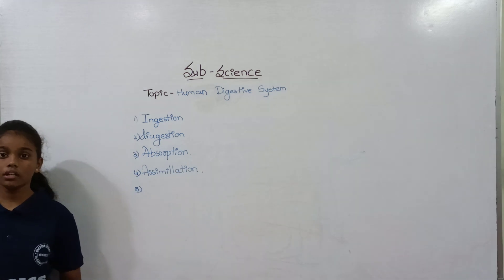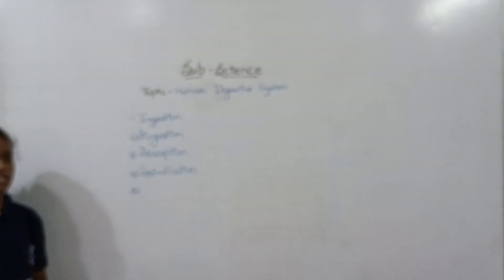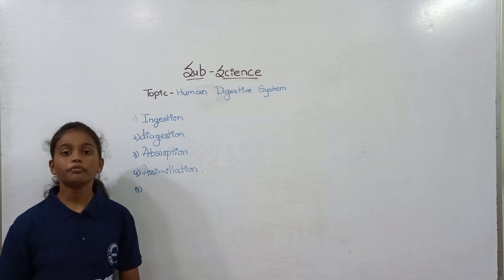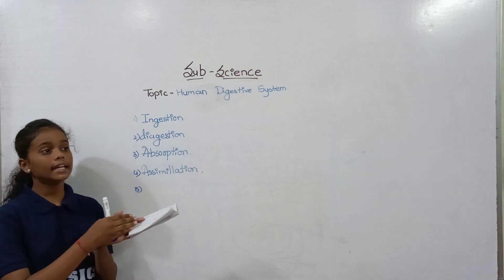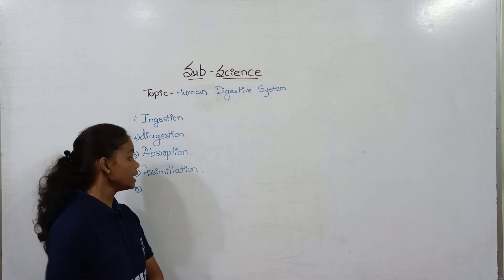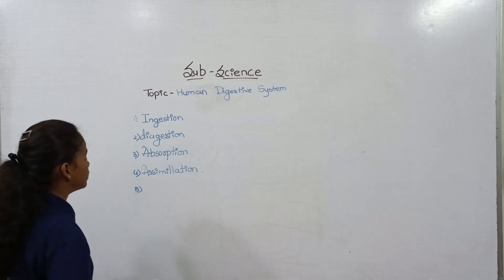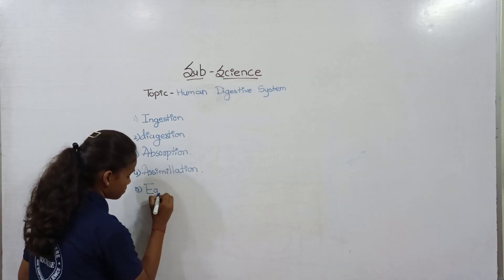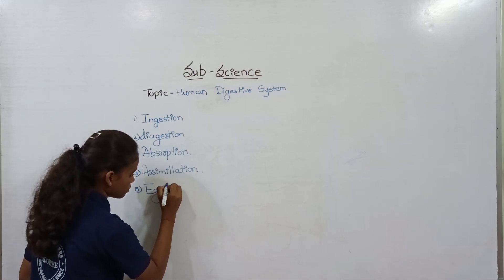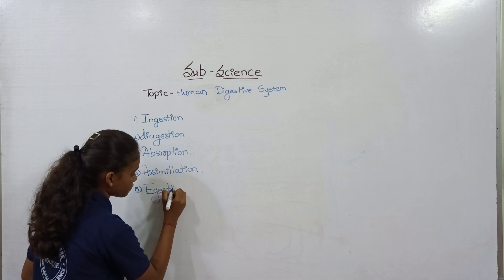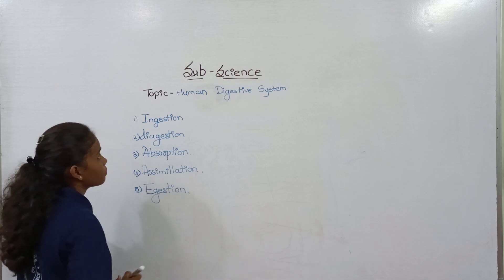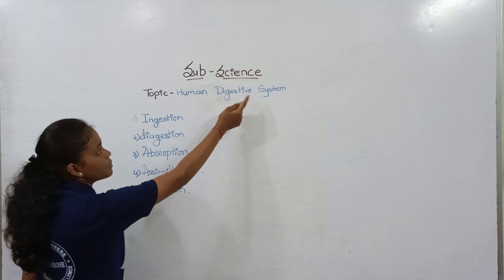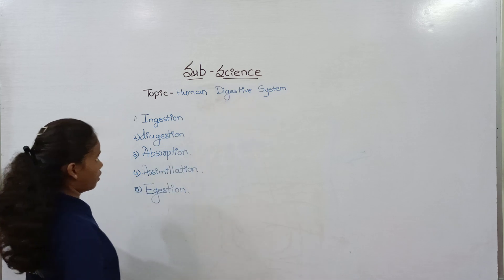This process is called assimilation. Then the undigested food that is taken out from our body is called egestion — that is the last process. By these five processes, the digestive system is complete.